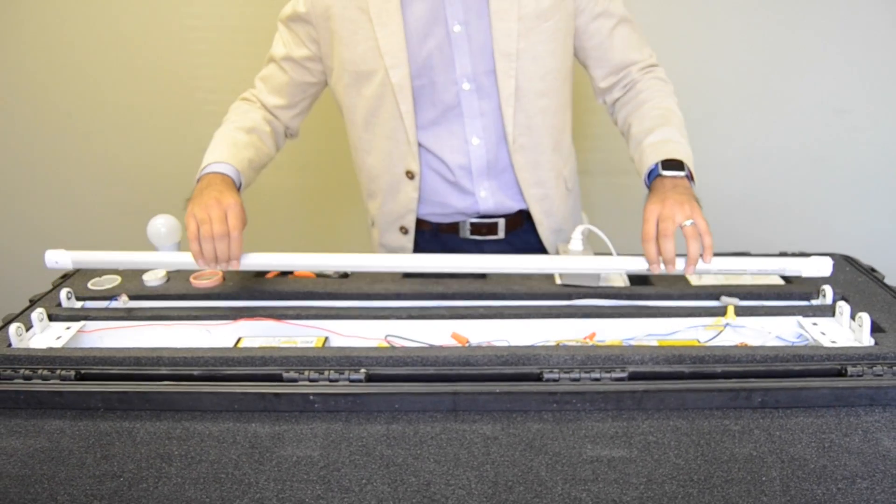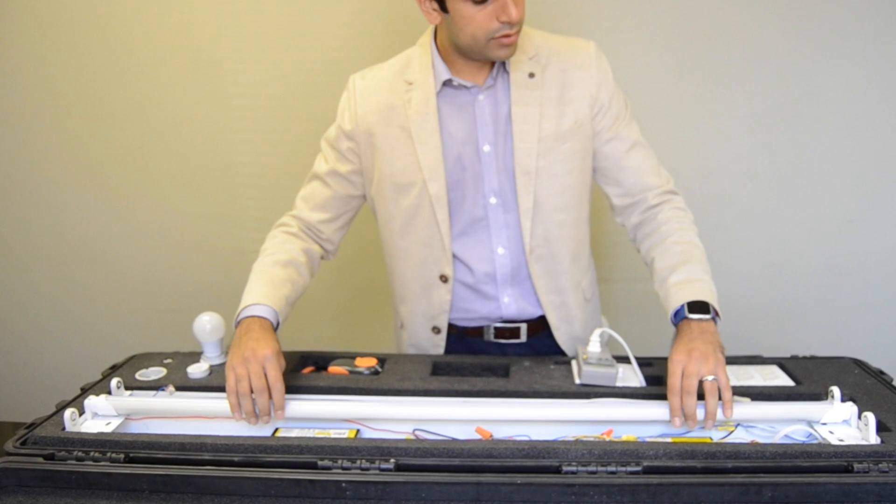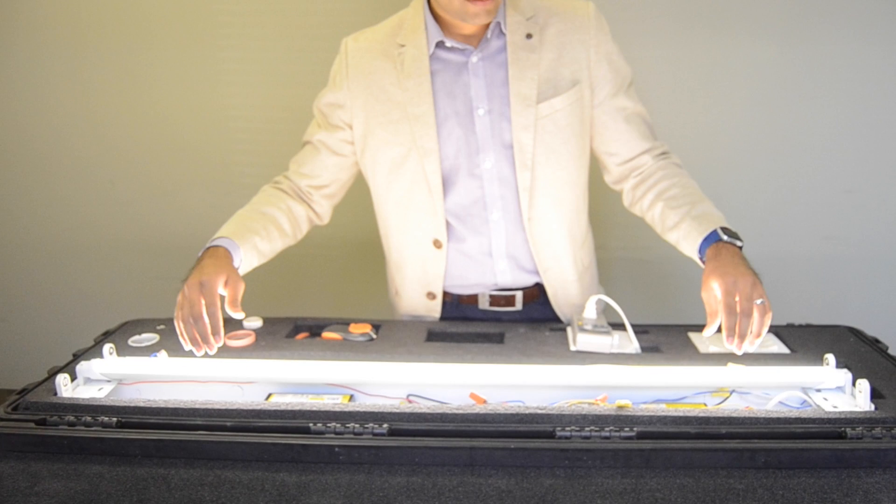Next we have two end wiring. Unshunted or shunted, this tube will work with either tombstone.